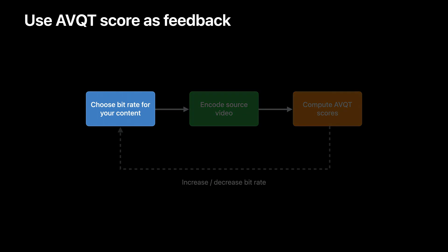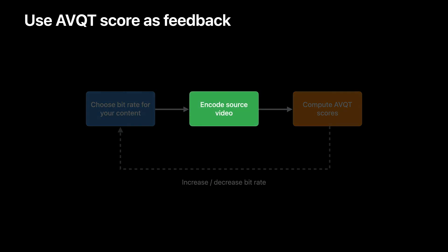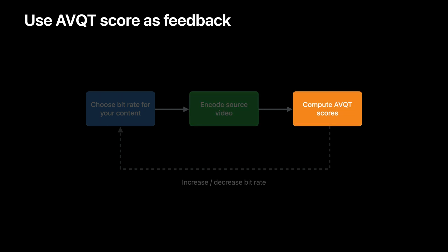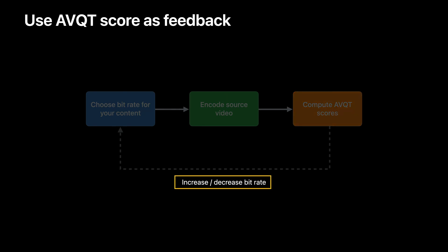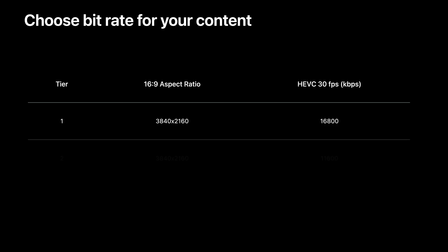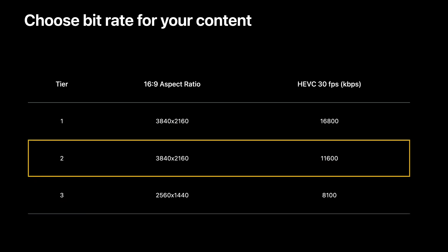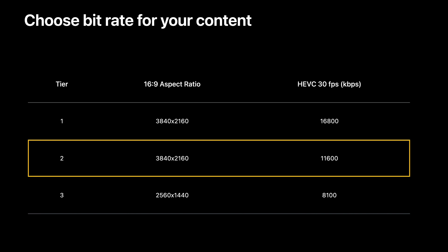Here's how you can use AVQT as feedback to help you determine the optimal bit rate for your content. First, we start with our initial target bit rates and use them to encode the source video and create the HLS tier. We then use the source video and the encoded HLS tier to compute video quality scores using AVQT. Finally, we can analyze AVQT scores to decide whether to increase or decrease the target bit rate for the HLS tier. As an example, let's pick the 2160p tier at 11.6 megabits per second and encode our two sequences — animation and sports — with this recommended bit rate.